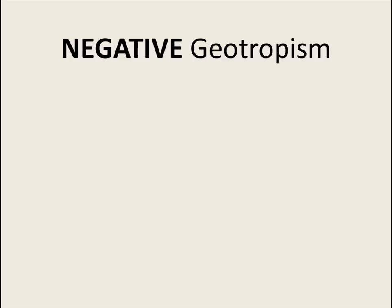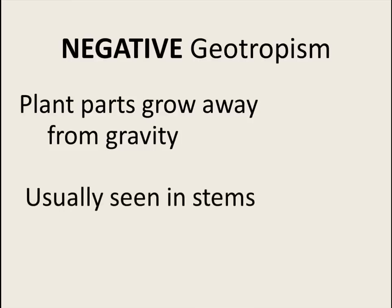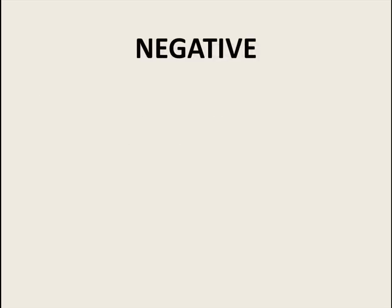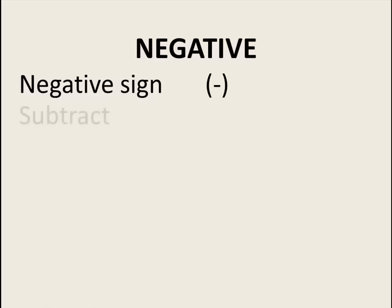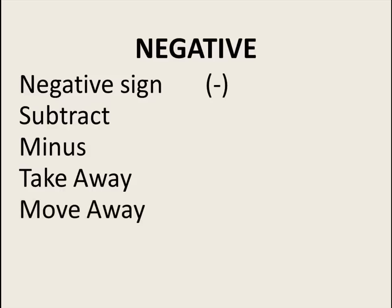Negative geotropism: plant parts grow away from gravity, usually seen in stems. Some people get confused by the concept of negative geotropism. This is a negative sign — you know it as a minus sign or a subtraction sign. So when you say negative, you could also say subtract, minus, or take away. Think of negative geotropism as when plants move away from gravity.